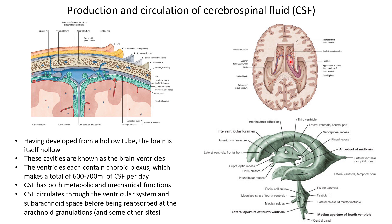Let's now think about the circulation of the CSF and follow its path from production to ultimate reabsorption. All ventricles contain choroid plexus, but the largest ventricles are the lateral ventricles. We can see on the cast of the ventricular system that the lateral ventricles are C-shaped structures deep within the cerebral hemispheres, and they contain the largest choroid plexi — meaning the lateral ventricles make the majority of the CSF.